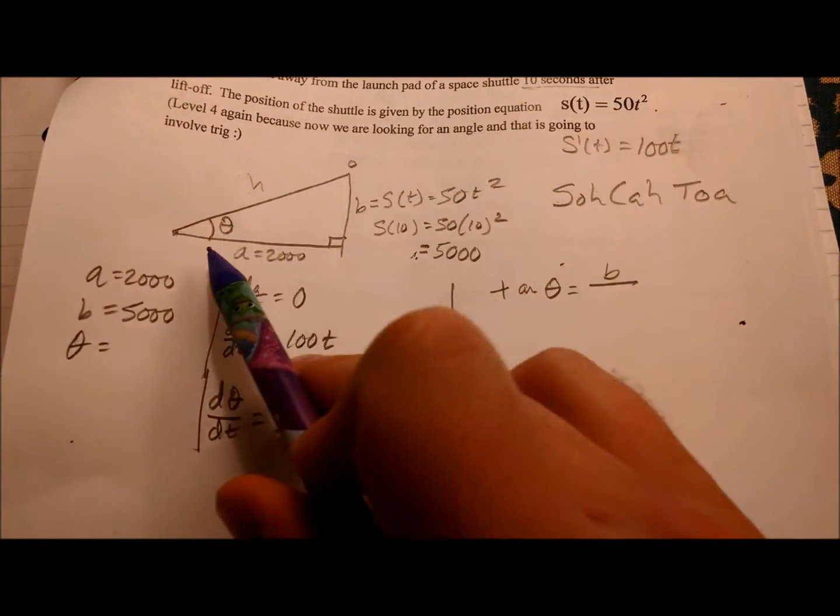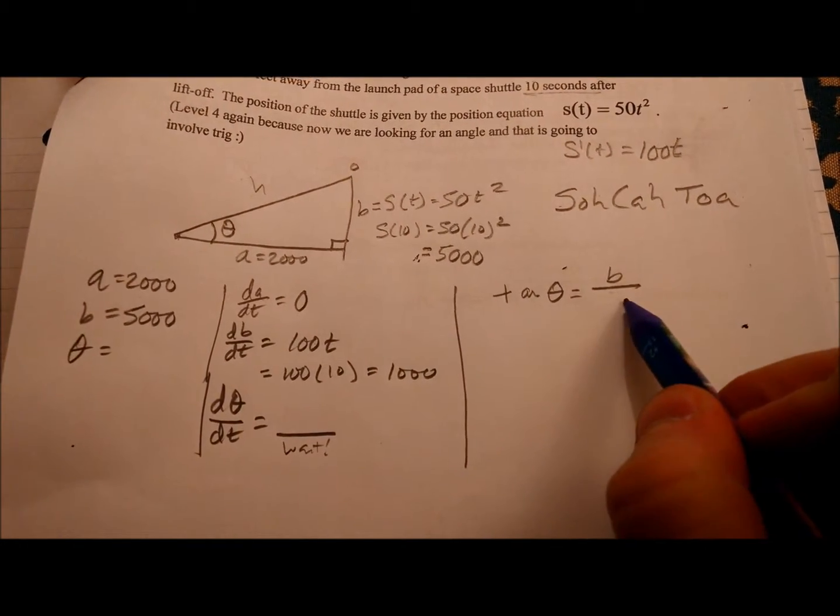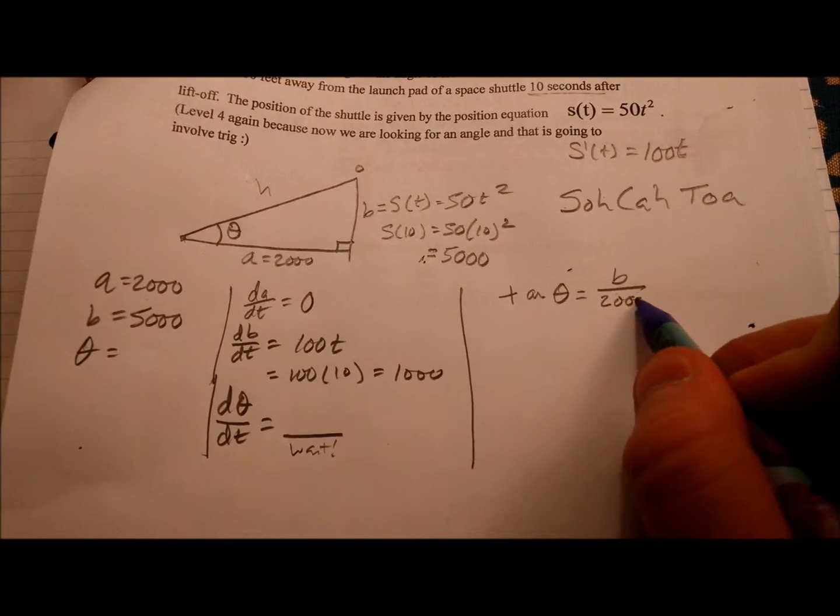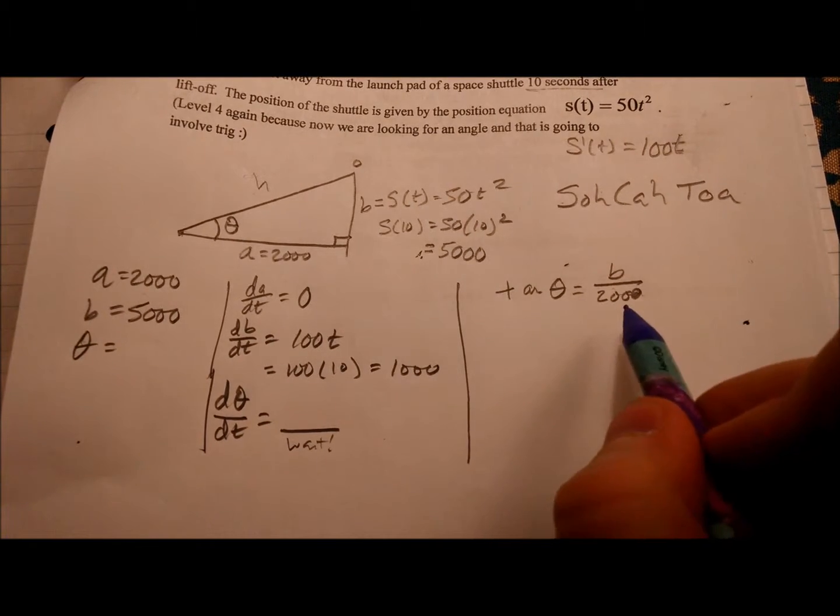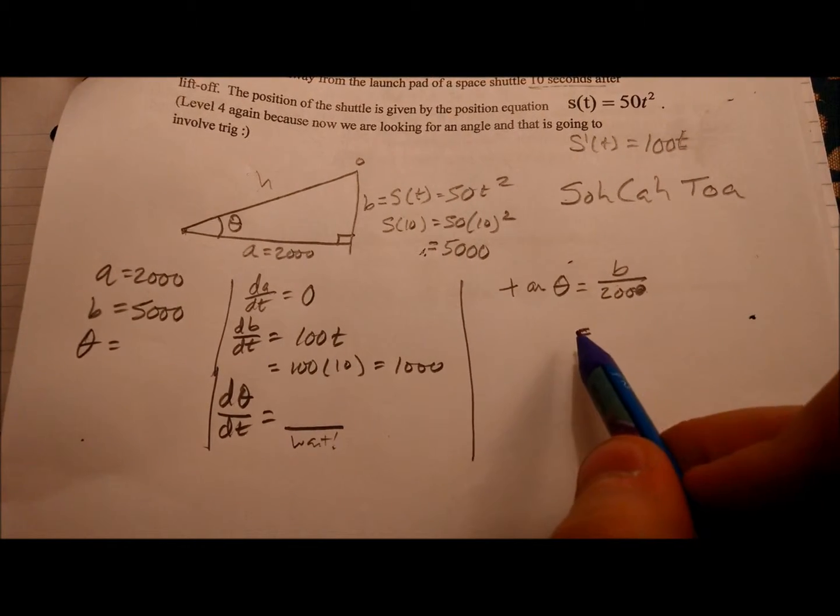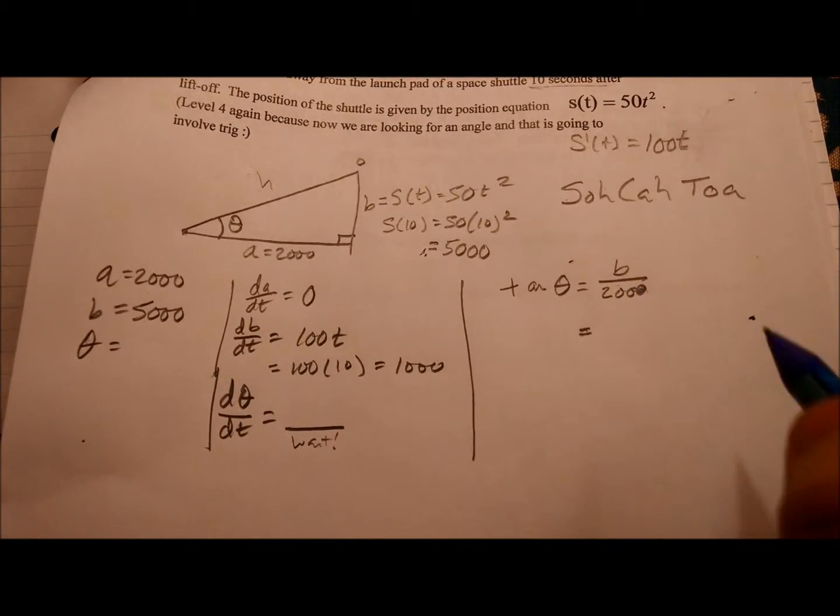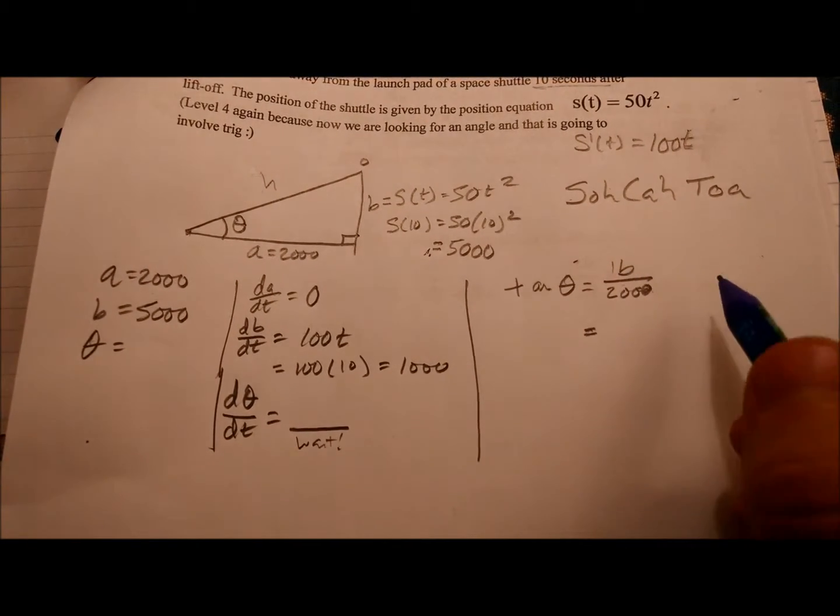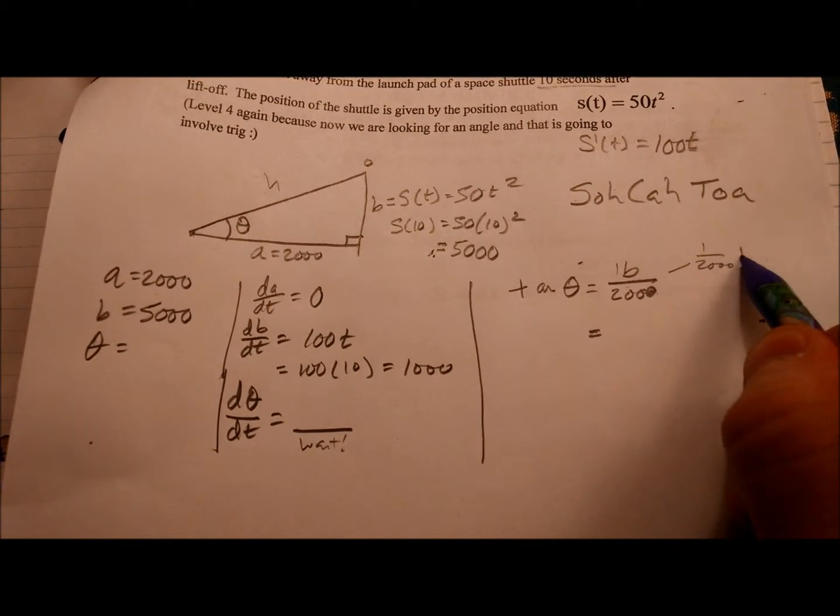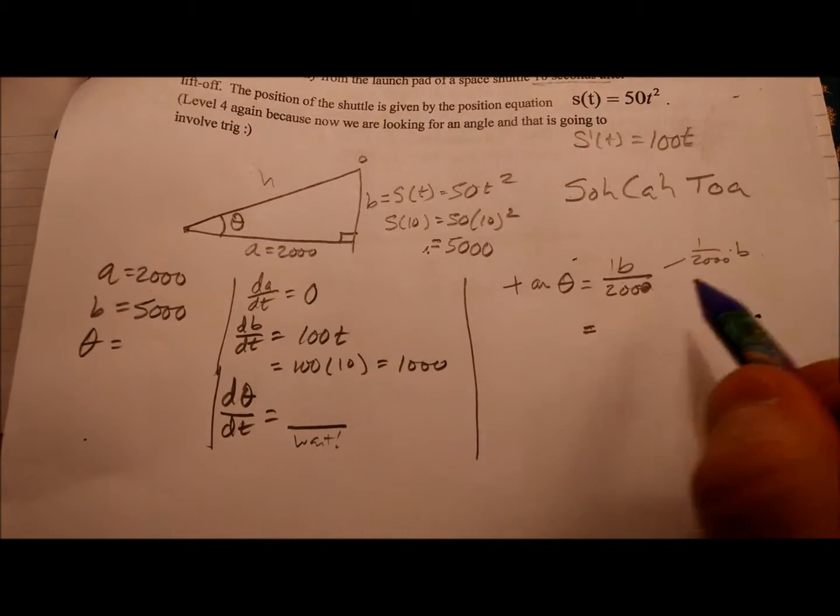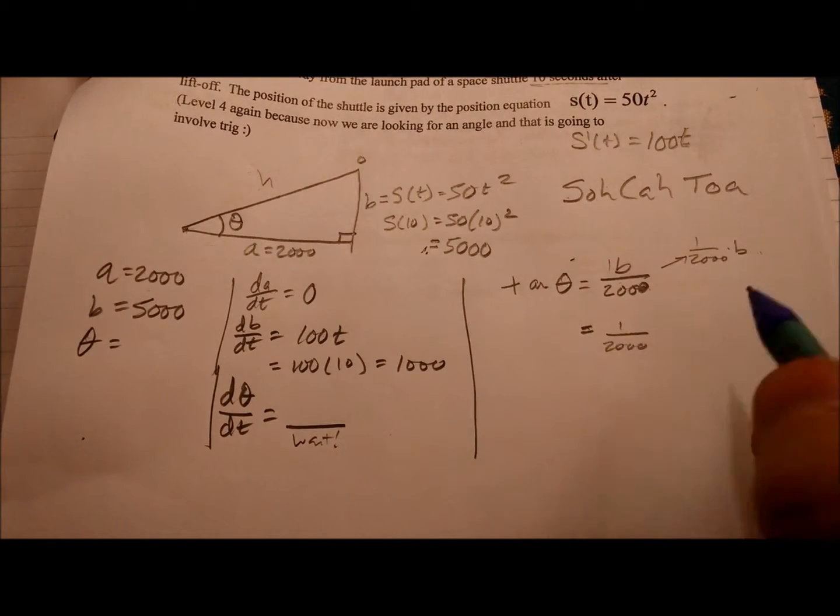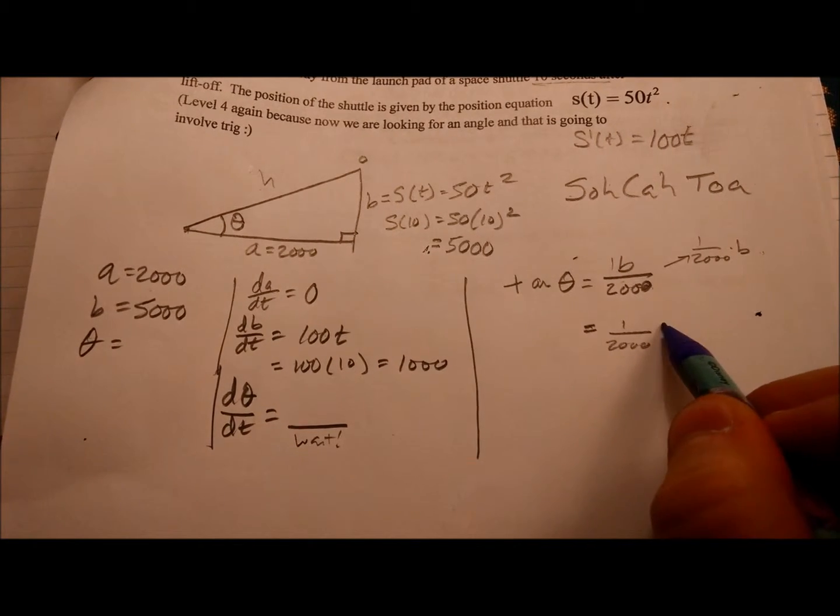Now remember, that's a fixed value. A is not changing. I could put B over A, but since A is 2,000, it's never changing. That's going to make taking the derivative of this so much easier. So if I took the derivative of this, the right-hand side's the easier side, so we'll do that first. I mean, this is really 1 over 2,000 times B. Remember, 1 over 2,000 times B, that's really all this is. So when I take the derivative of this, it's going to be 1 over 2,000 times DBDT.